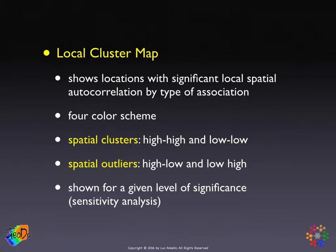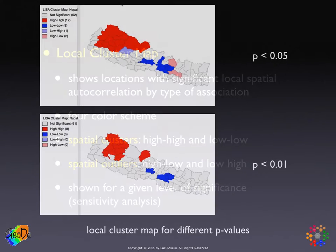The Moran scatterplot divides spatial autocorrelation into four types: two for positive spatial autocorrelation — called spatial clusters — in the high-high and low-low quadrants, and two for negative spatial autocorrelation — called spatial outliers — in the high-low and low-high quadrants (all relative to the mean). We combine this with significance information to make a map with four different colors.